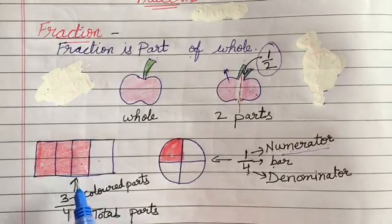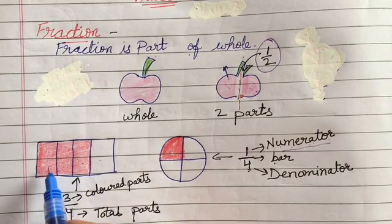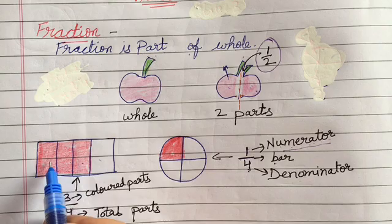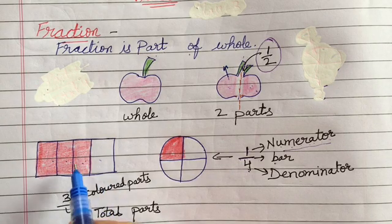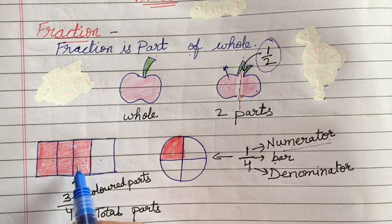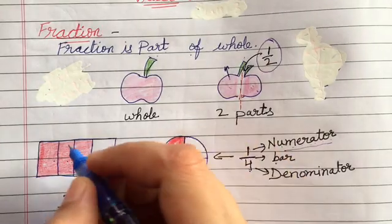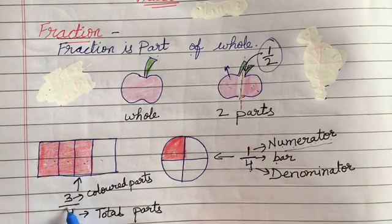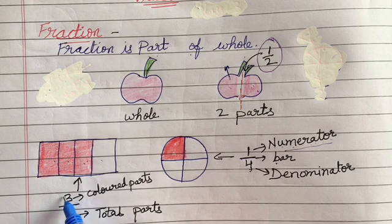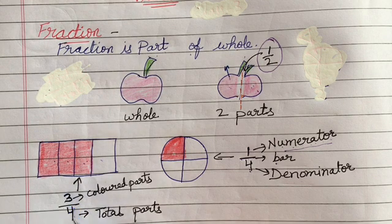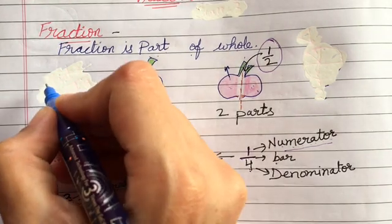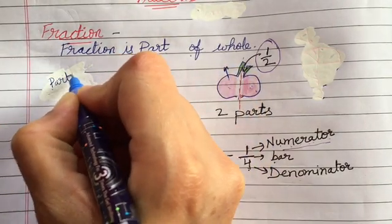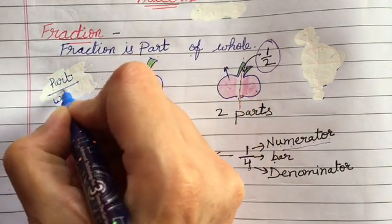For another example, we have a rectangle converted into 4 parts — 1, 2, 3, 4 — and out of these we have colored 3 parts. So what will be the fraction for this? Total number of parts are 4 and colored parts are 3. As we said, this fraction is part by whole.